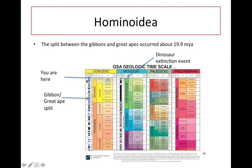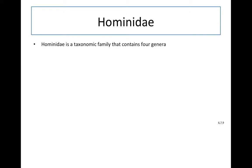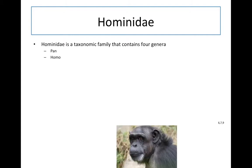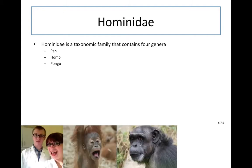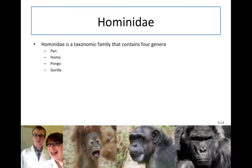The gibbon and great ape split occurred here, and you are here. So in Earth terms it's a very recent event, but in human lifespan terms it was a long time ago. Hominidae is a taxonomic family that contains four genera: pan, which are the chimps; homo, which is us; pongo, which are the orangutans; and gorilla, which is self-explanatory. These contain seven extant species.